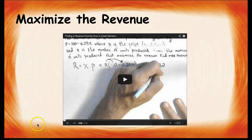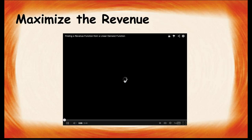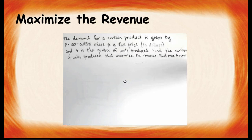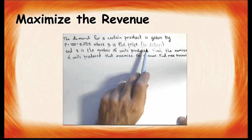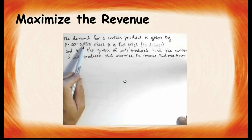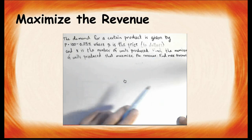Let's go ahead and look at this example, where we maximize our revenue. In this problem, we're going to look at using a linear demand function in order to create a revenue function. So, let's say the demand for a certain product is given by P equals 100 minus 0.25x, where P is the price in dollars, and x is the number of units produced. So, the more units they produce, the more the price goes down. What we want to do is find the number of units produced that maximize the revenue and find the maximum revenue.